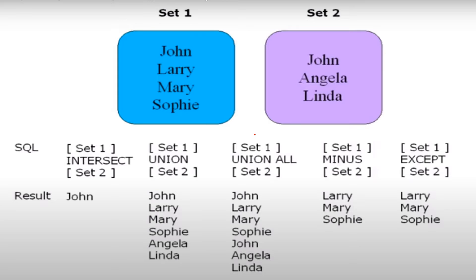The next one is MINUS. If you see set one, we have John, Larry, Mary, Sophie and set two has John, Angela and Linda. But if we use MINUS, it just returns Larry, Mary, Sophie from the first result set — which means it returns the values of the first result set which are not in the second set. So John is in the second set, so it does not return John. It returns all the values of set one except John, because John is in set two.